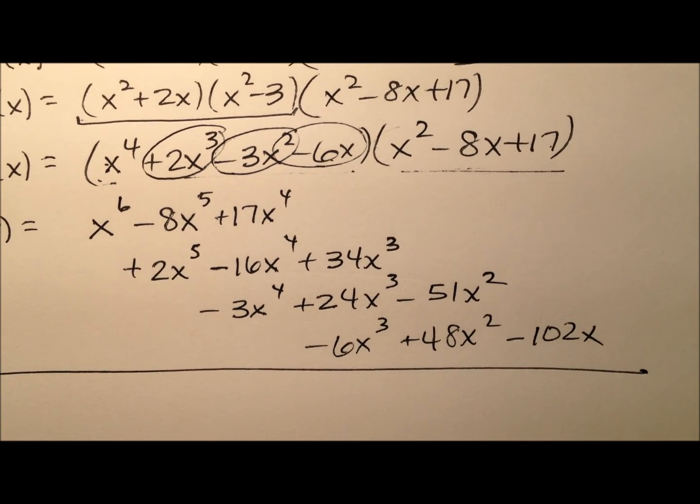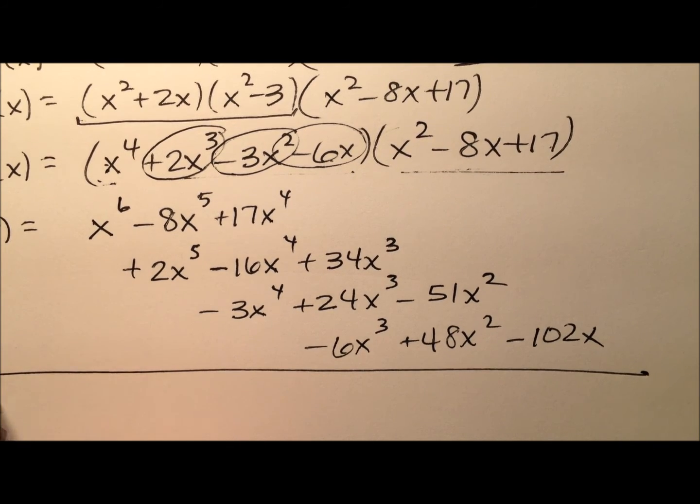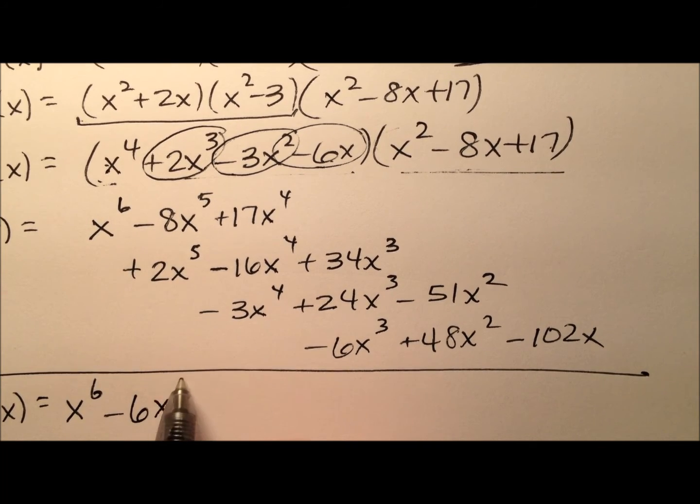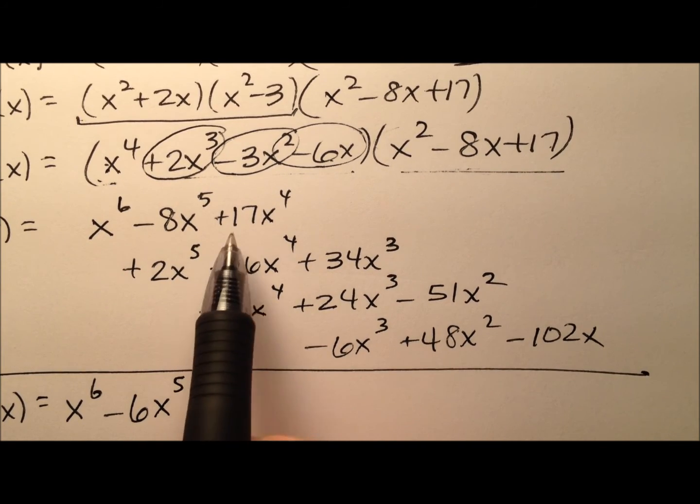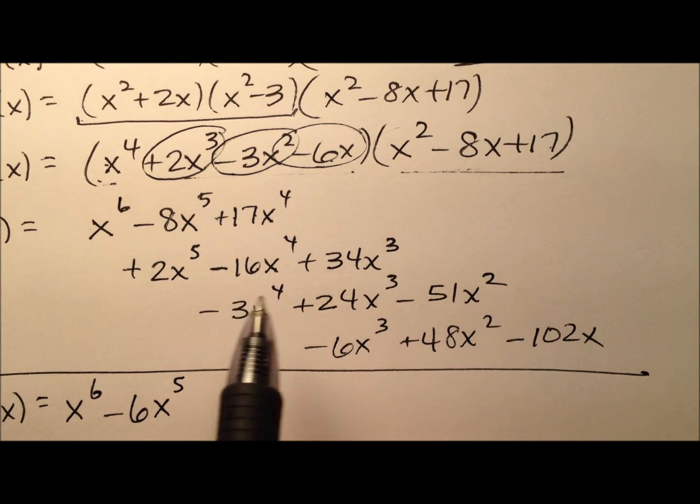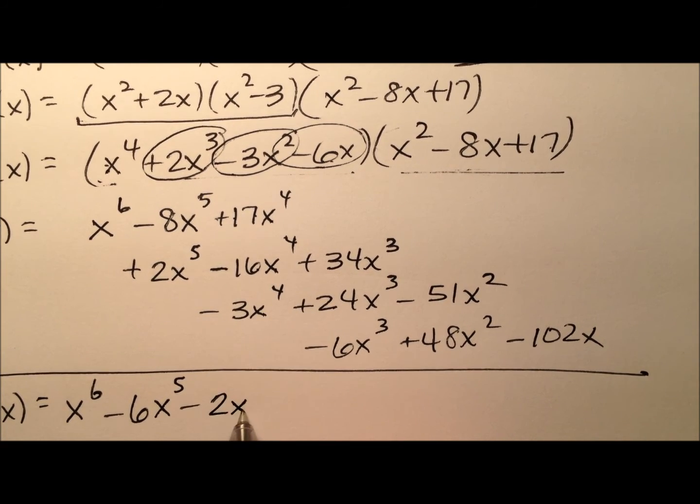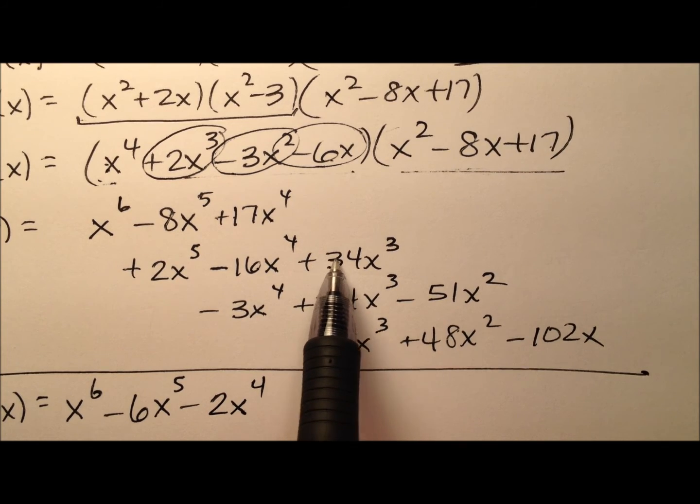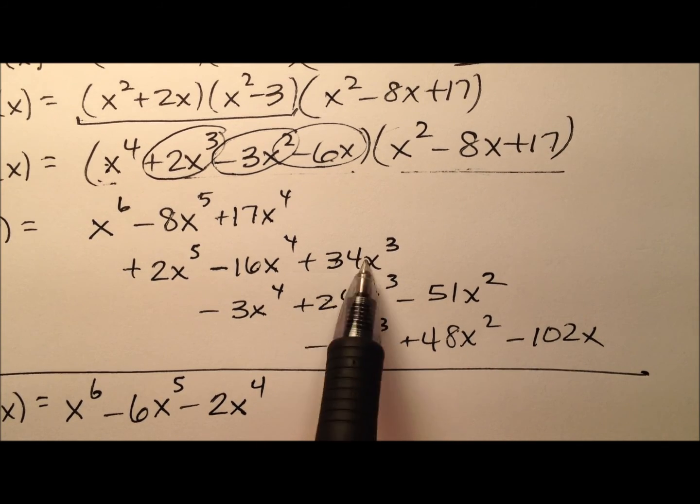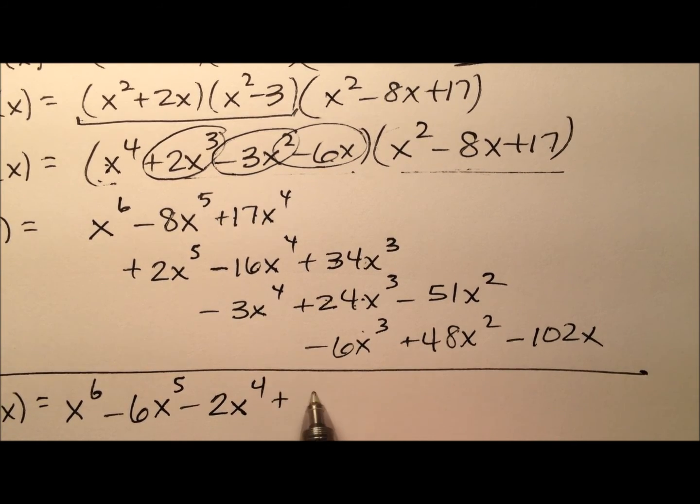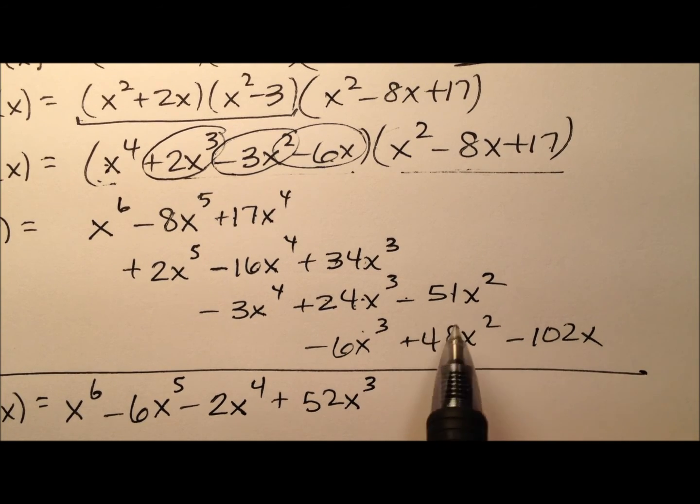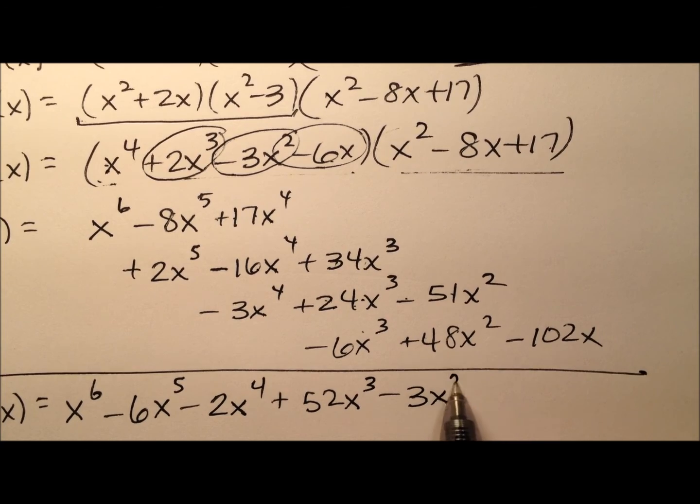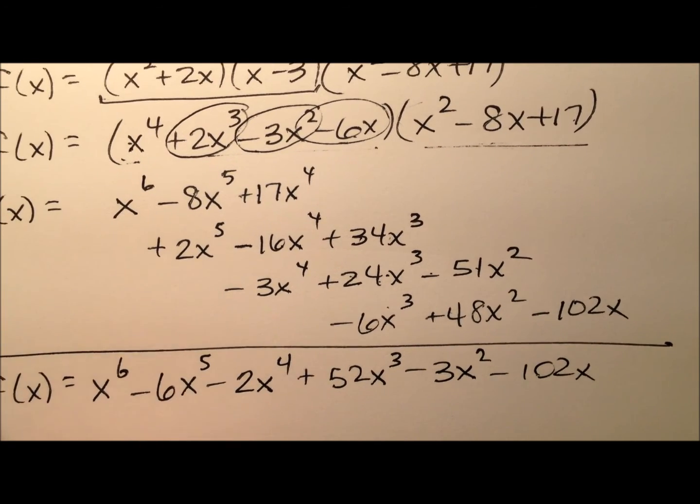Lots of terms. 12 as I promised. And we do have a lot of like terms. So this won't come out too badly. So x to the sixth minus 6x to the fifth. And then we have 17 minus 16, so 1 minus 3 more is negative 2x to the fourth. And then we have a 34 and a 24, which makes 58 minus 6 is 52x cubed. And then we have a negative 51 plus 48. So negative 3x squared minus 102x.